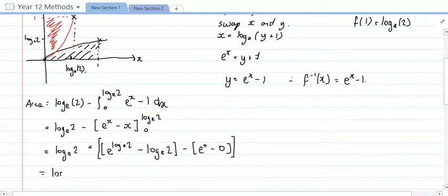So that's equal to log e of 2 minus, now e to the log e of 2 is just 2, minus log e of 2, and then minus e to the 0, which is just 1.